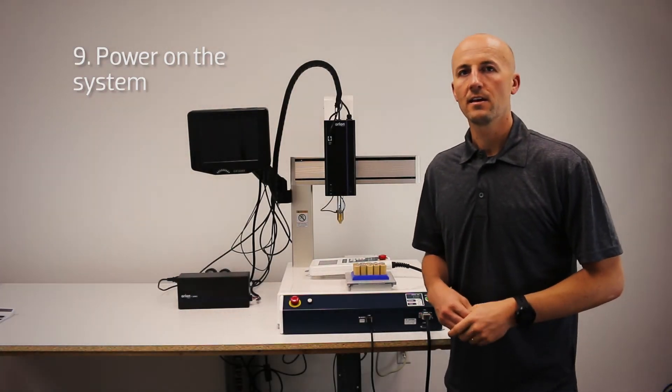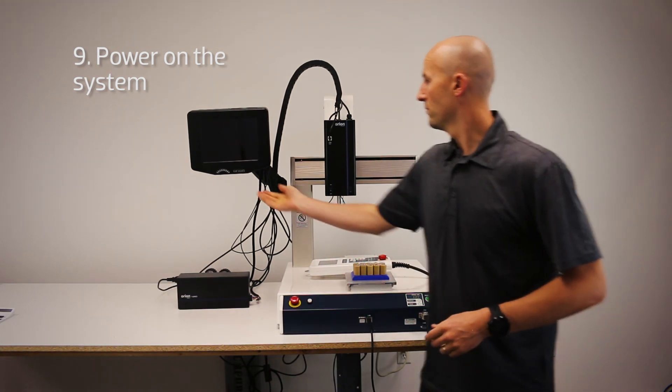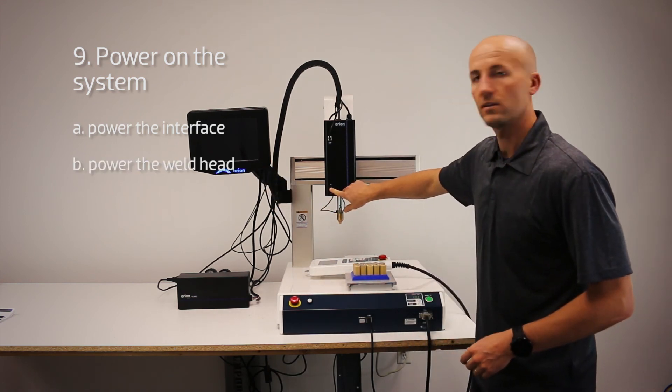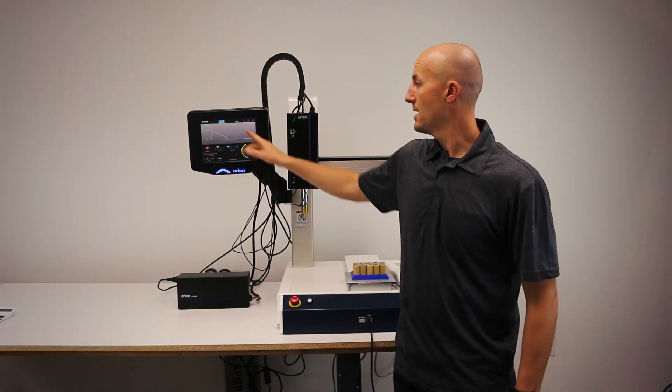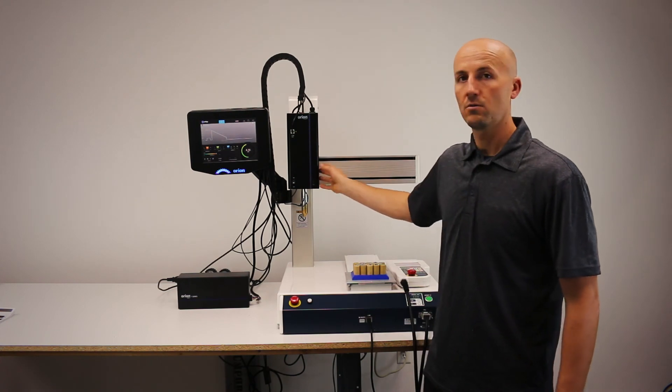Now we have everything connected. There are three power switches: one on the Orion, one on the welder, and one on the back of the system. Now we have the user interface for being able to weld with this system.